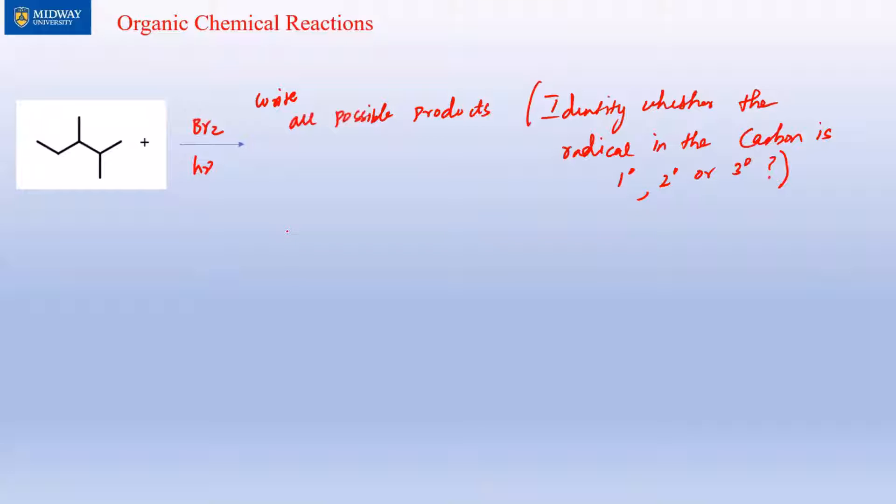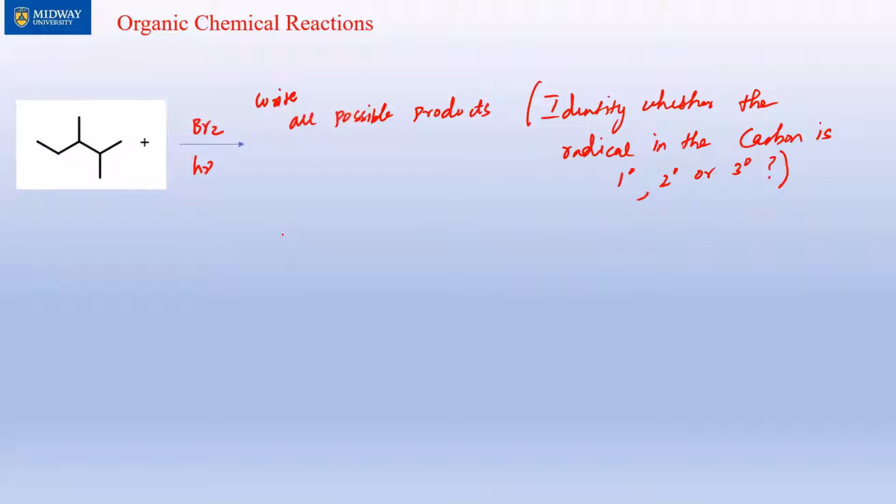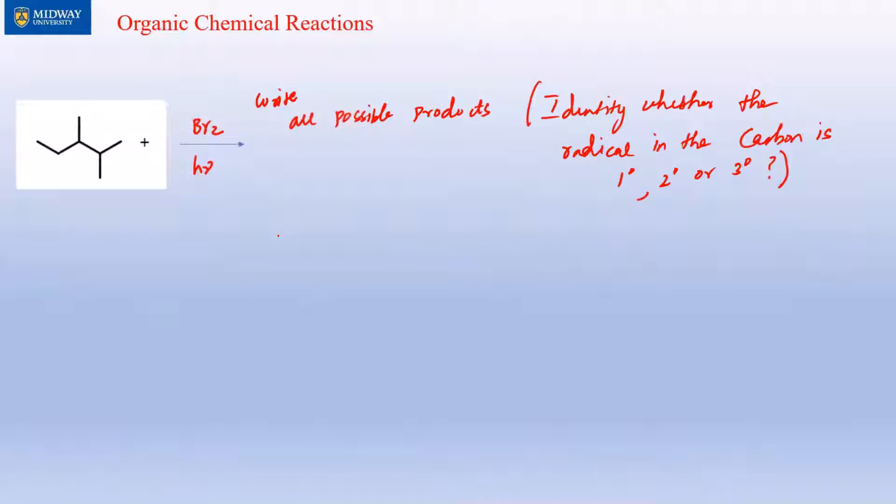This is how you synthesize an alkyl halide from an alkane by reacting an alkane with a halogen using a free radical mechanism. This looks like a lot on the screen but if you watch the video, things only appear one at a time. Practice this problem and I'll see you with another video.